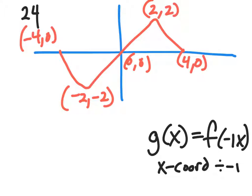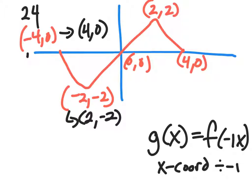Negative 4 comma 0 is going to become positive 4 comma 0. Negative 2, negative 2 is going to become positive 2, negative 2. 0, 0 is going to become 0, 0. 2, 2 is going to become negative 2 comma 2. And 4, 0 is going to become negative 4 comma 0.